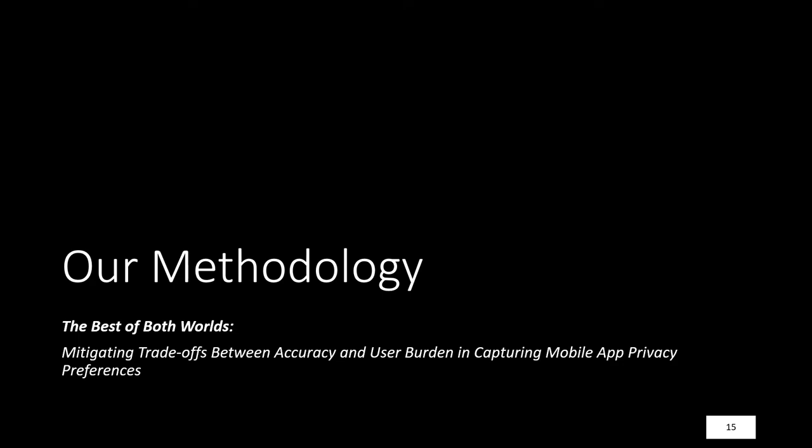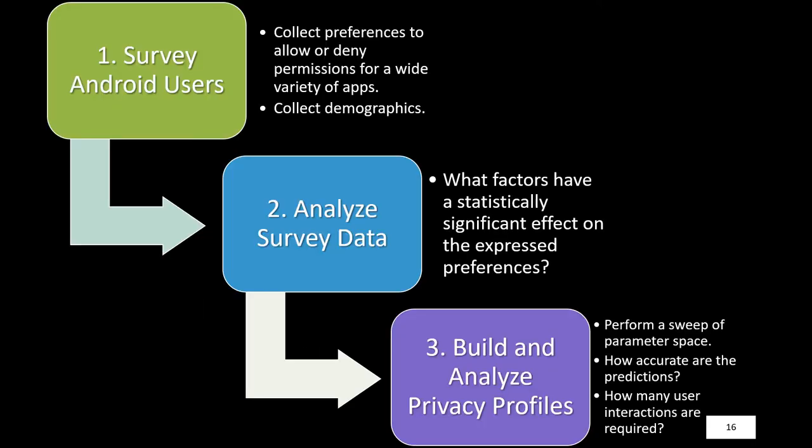Our methodology is a little bit different. First, our study surveyed Android users at scale, using crowdsourcing on Amazon Mechanical Turk to collect preferences to allow or deny app permissions for a wide variety of mobile apps. Then we collected demographics about users, because we had an intuition that these demographics may also correlate with expressed preferences. Next, we performed analysis of the survey data using regression modeling and hypothesis testing, in order to expose which factors had a statistically significant effect on the expressed preferences of users.